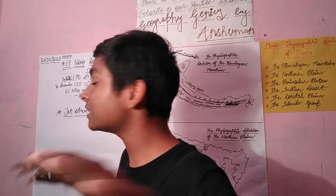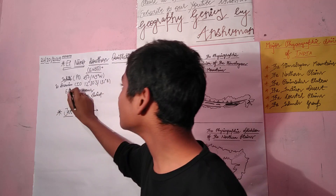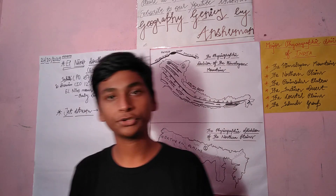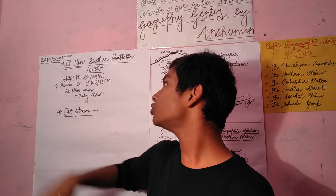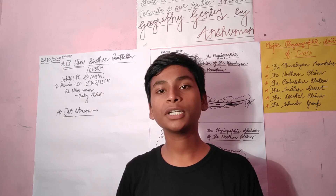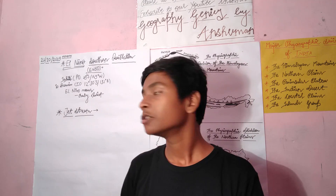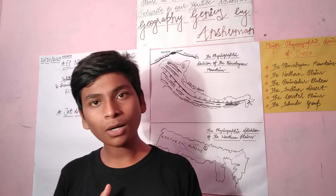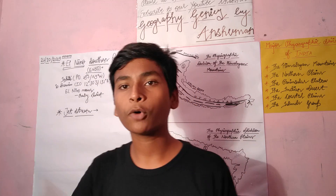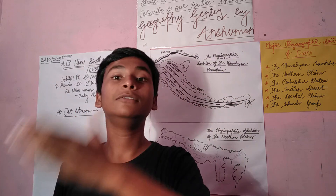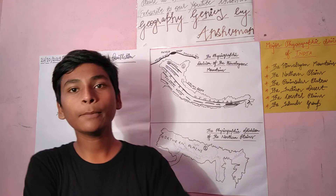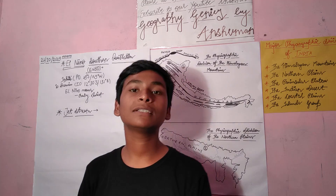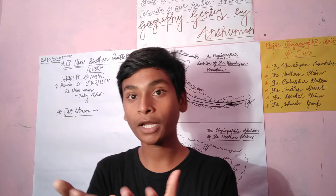ENSO is a special type of ocean current flowing from the Tahiti region of the Pacific Ocean to Darwin in Australia in the Indian Ocean. Always remember: in the Eastern part you will find low pressure, whereas in the Western part you find higher pressure. El Niño stands for baby Christ, and this topic is very important. It is a relatively new type of ocean current found in our books.